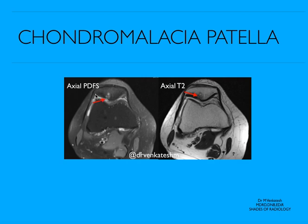You can see this is the lateral patella facet, then this is the medial patella facet, and this is the median ridge of patella. This is the normal cartilage — you can see the outline — and here you can see there is a cartilage defect and multiple subchondral cystic changes and some amount of sclerosis.